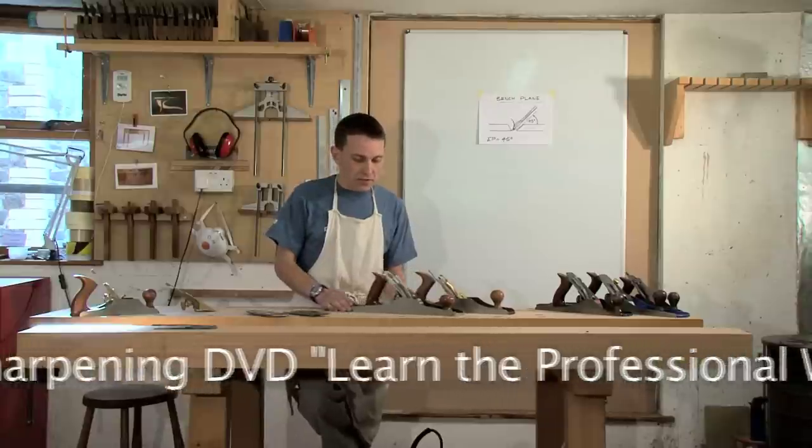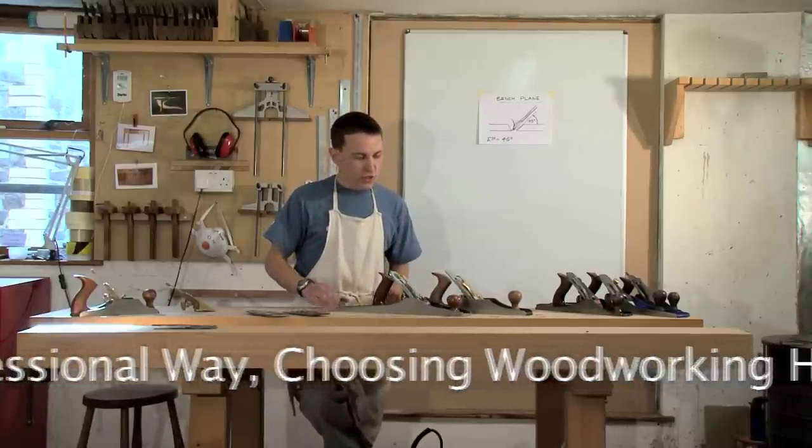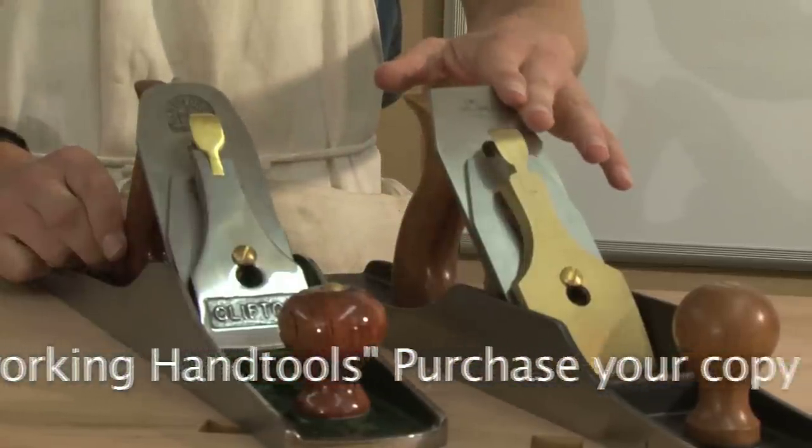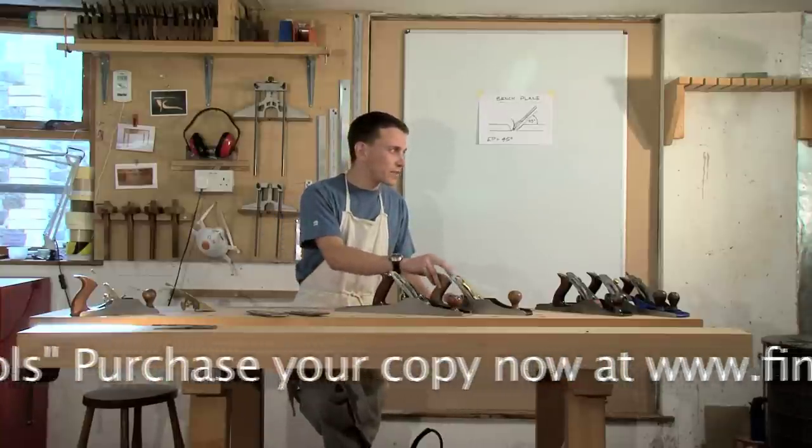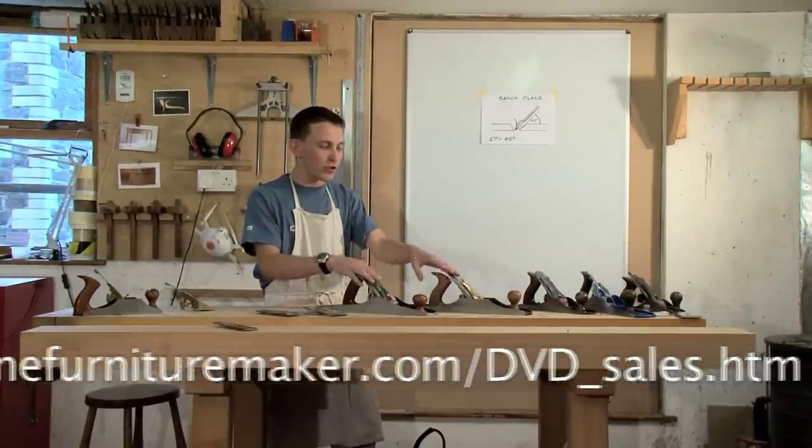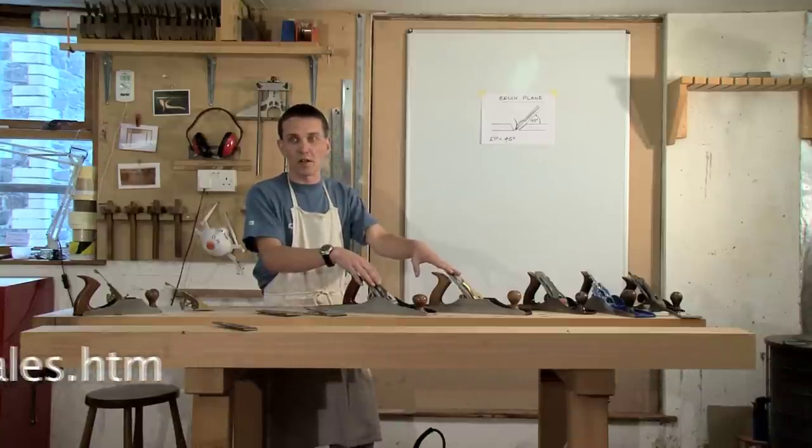Now the next thing that's important are the blades. And these two planes carry very different blades. In a Lee Nielsen you've got an A2 blade. A2 steel is a cryogenically treated steel. So either of these two would make a very good choice as your main bench plane.